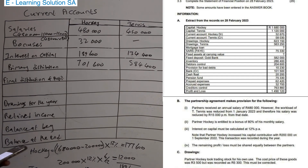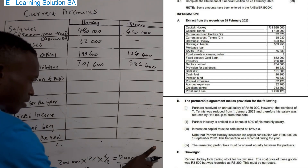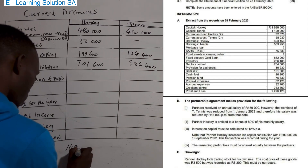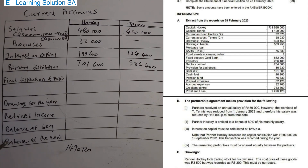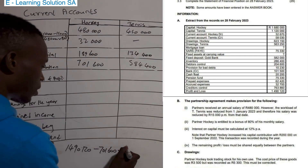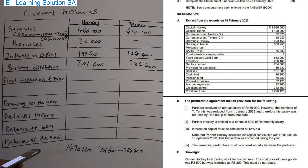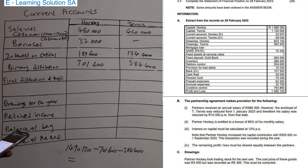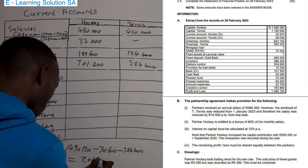Now we calculate the final distribution of profit. The net profit for the year is 1,490,120. From this we subtract the primary distributions: minus 701,600 for Hooky and minus 584,400 for Tennis. After subtracting both primary distributions we get the remaining profit or loss, which the partners will share according to the profit-sharing ratio.